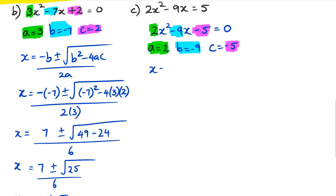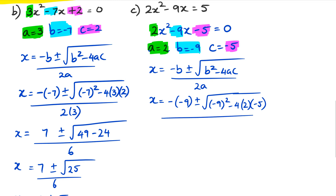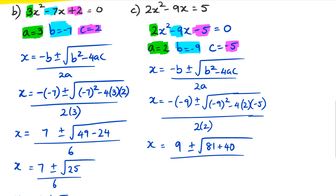Once I've got all of those, I put them back into the formula: negative b plus or minus the square root of b squared minus 4ac, over 2a. So x is equal to — and again b is negative nine so we put it in brackets — negative nine, plus or minus negative nine squared minus four times two times negative five, all divided by two times two. Negative of negative nine is positive nine. Negative nine squared is 81, and negative four times two times negative five is plus 40, divided by four.